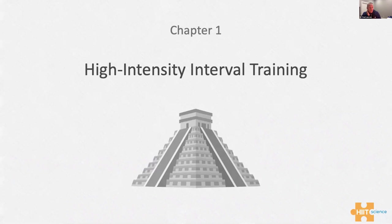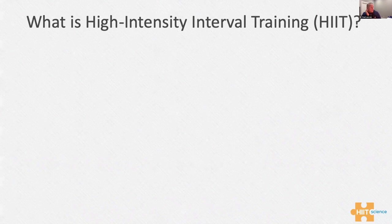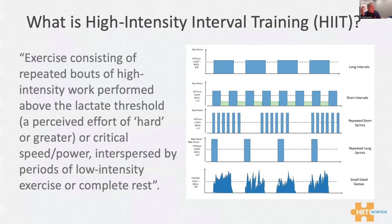With chapter one, just to introduce the area: with high-intensity interval training — what is it? It's exercise consisting of repeated bouts of high-intensity work performed above your lactate threshold. An effort that's perceived as hard, in your red zone — above that threshold. By definition, it needs to be above that demarcation point, and then it's separated by periods of rest.